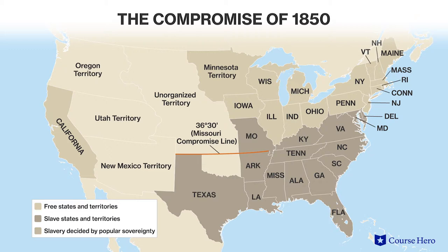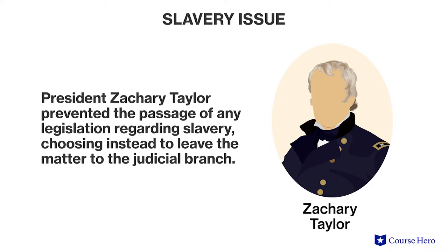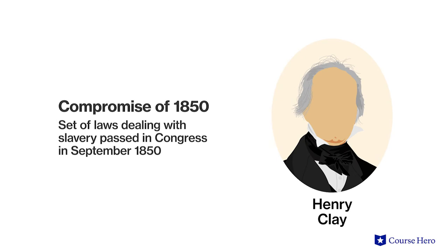Early compromise attempts failed. President Zachary Taylor prevented the passing of any legislation regarding slavery, choosing instead to leave the matter to the judicial branch. Nevertheless, circumstances changed when Taylor died late in the summer of 1850 and Millard Fillmore took office.